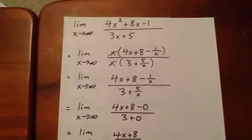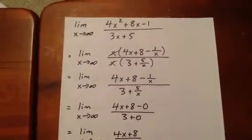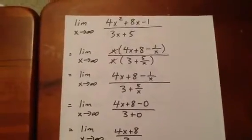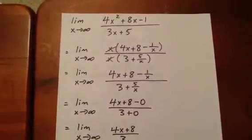Well, we see that we can factor x squared out of the numerator and x out of the denominator. So we choose the lower degree of those two options.